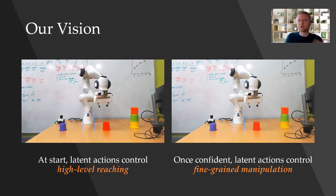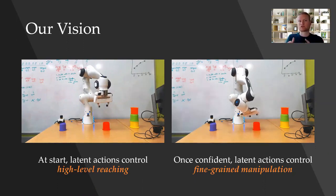As the human gets or approaches that goal, the robot becomes more confident, and the user's inputs gradually shift to control fine-grained motions at that goal.